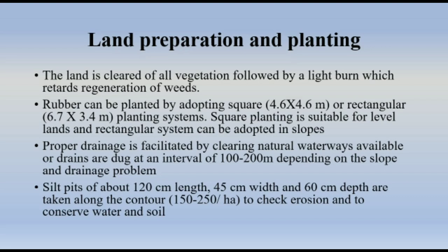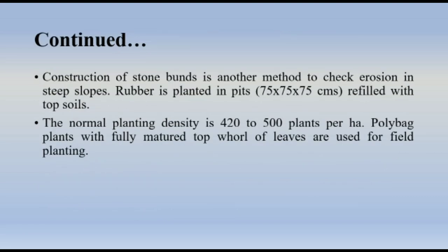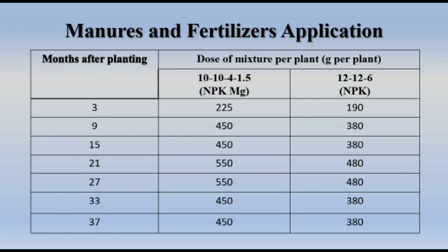Proper drainage is facilitated by clearing natural waterways or drains dug at an interval of 100 to 200 meters depending on the slope and drainage problem. Slit pits of about 120 cm length, 45 cm width, and 60 cm depth are taken along the contour at 150 to 250 per hectare to check erosion and conserve water and soil. Construction of stone bunds is another method to check erosion on steep slopes. Rubber is planted in pits of 75 × 75 × 75 cm refilled with top soil; the normal planting density is 420 to 500 trees per hectare. Polybag plants with fully matured top whorl of leaves are used for planting.